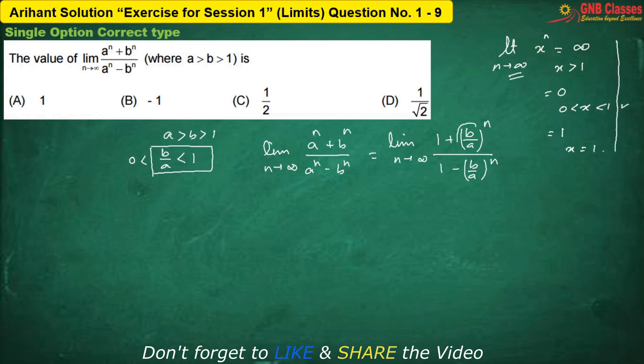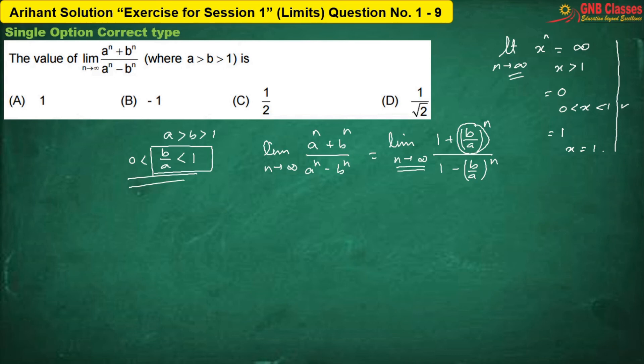In this case, B by A is lying between 0 and 1. Hence, as n approaches to infinity, (B/A)ⁿ approaches to 0. Therefore the limit becomes 1 only. Hence, option A is correct. Have you understood the problem clearly?